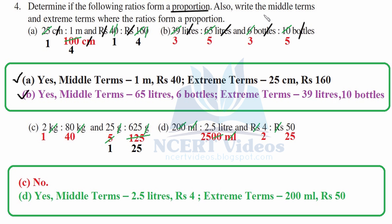Part c: kg cancels, giving 1 to 2 and 40 to 80. Grams cancel: dividing 5 to 25, then 125 fives are 165 — or dividing by 5 gives 5 to 10, and 25 again divided by 5 gives 5 to 10 and 5 to 25. These are not equal, so we don't write middle or extreme terms.